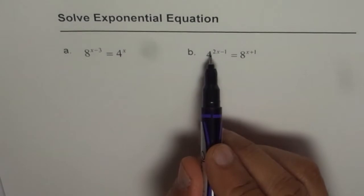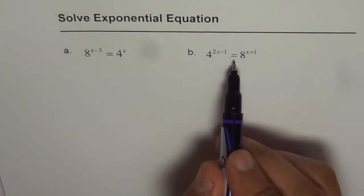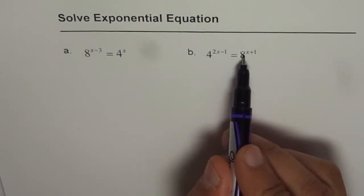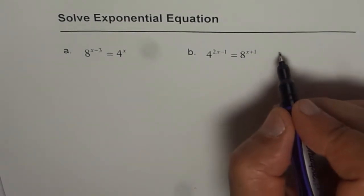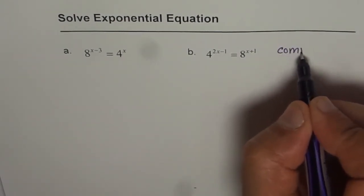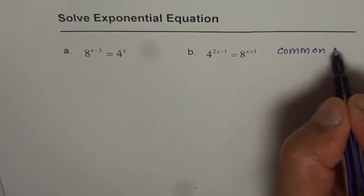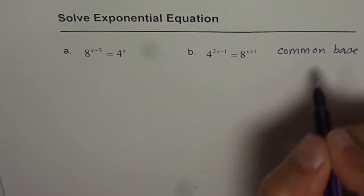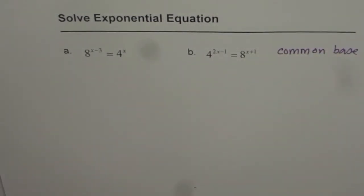Here we have 4 to the power of 2x minus 1 equals 8 to the power of x plus 1. To solve, we should have common base. That is the first step. How to make common base? Once the base is common, then we can equate the exponent and solve for the unknown value of x.